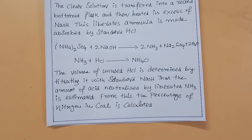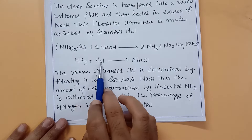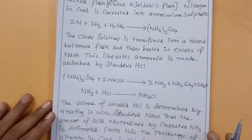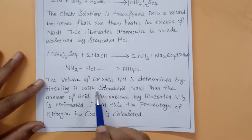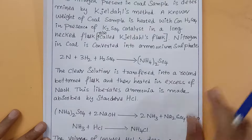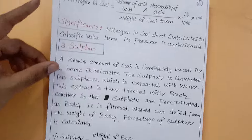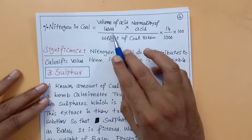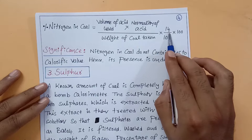The used HCl content equals the ammonia content, and the ammonia content represents nitrogen. The percentage of nitrogen in coal is calculated as: (volume of acid used × normality of acid / weight of coal) × (14/1000) × 100. The significance: nitrogen in coal does not contribute to calorific value, hence its presence is undesirable.